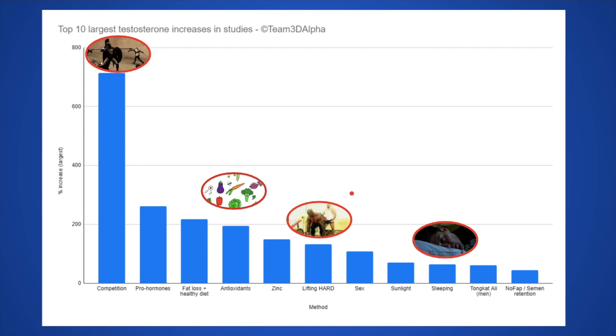I put them in order. You got from competition being number one, which led to the largest increase, all the way down to different items like sex, sunlight, sleeping, supplements, lifting hard, whatever. But let's talk about this one here, which was the biggest increase in free testosterone ever. Keep in mind this one here is free testosterone, which is what actually counts.